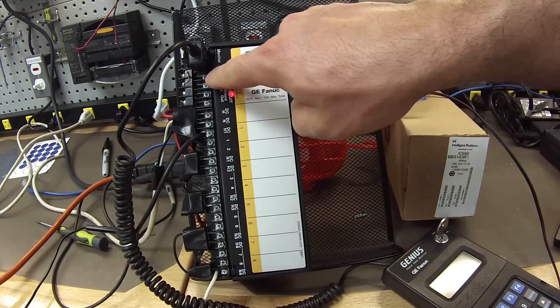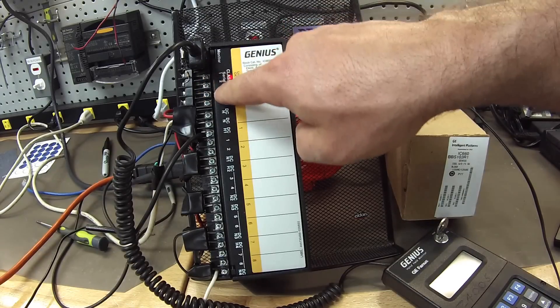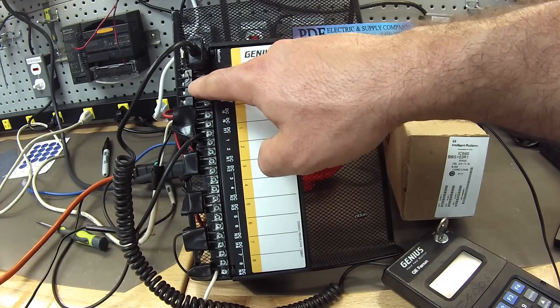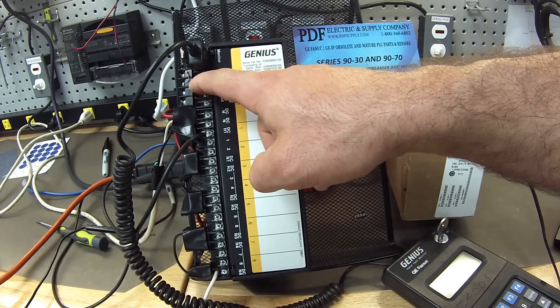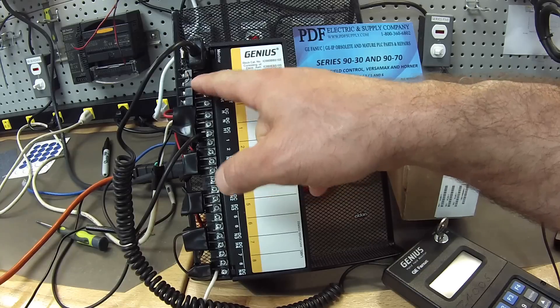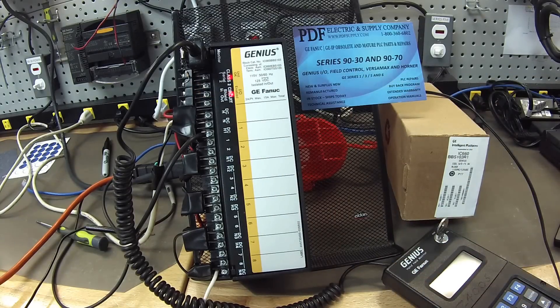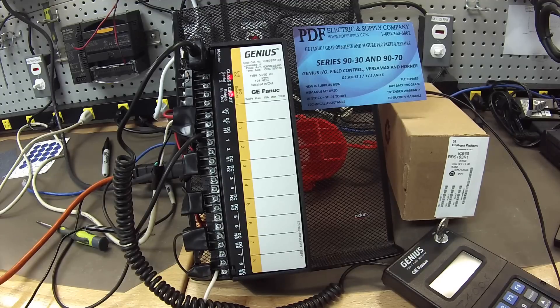The next thing is the serial port information, serial one and two. This is connected to a Genius Bus controller, part number IC693BEM331. That's attached to an IC693CHS397 five slot rack for this test.